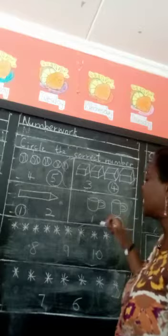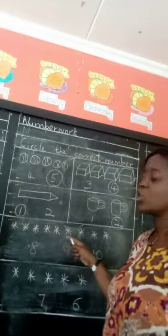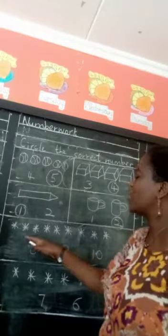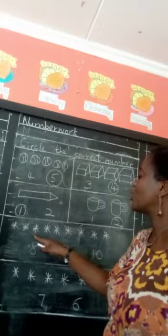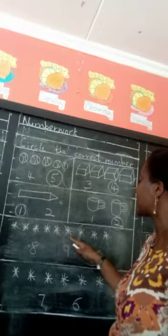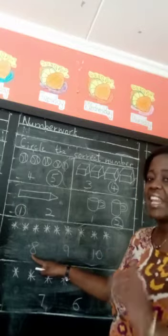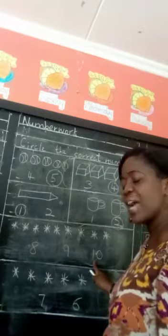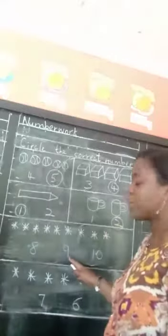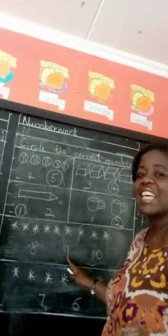Then three, four, five, six, seven, eight, nine. Is this number nine? No. Is this number nine? No. How about this one? This is number nine. So we circle number nine.